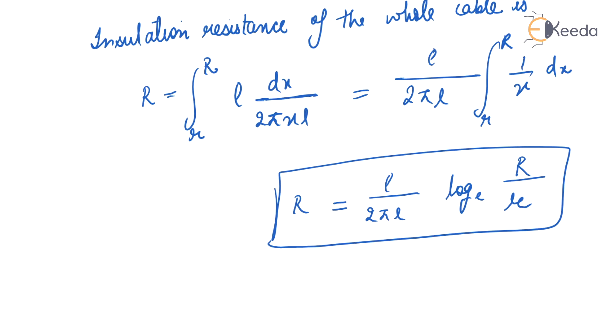This is the insulation resistance of the whole cable. R equals (ρ / 2πL) log_e(R/r).